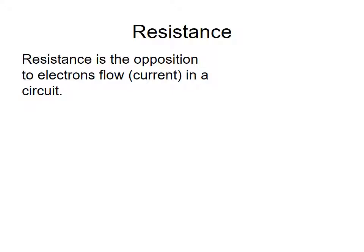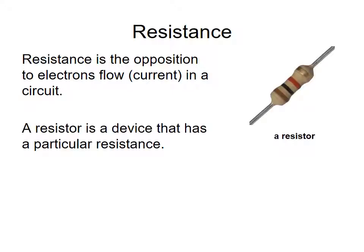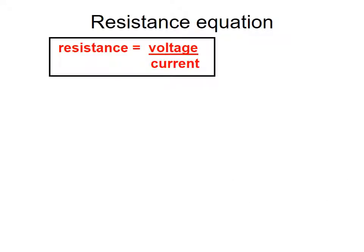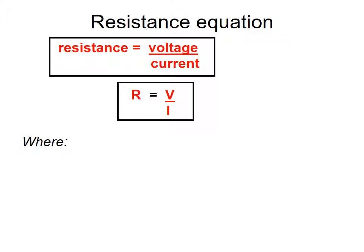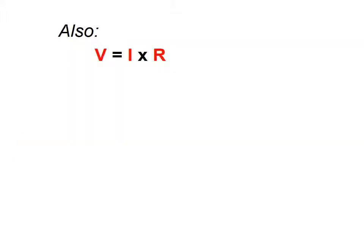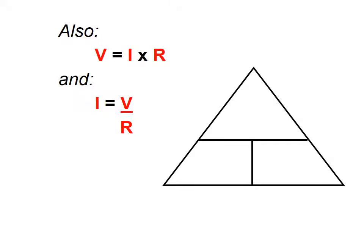Now we're going to look at resistance. Resistance is the opposition of electron flow or current in a circuit. Like all things in physics there is a resistance equation: resistance equals voltage divided by current, or R = V/I, where voltage is in volts, current is in amperes, and resistance is in ohms (Ω). You can also rearrange to get V = IR and I = V/R, and there's a pyramid triangle for that too.